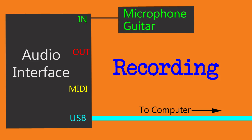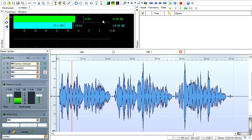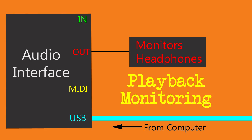When recording, the audio interface converts the signal from the microphone or guitar into data and sends it to the computer via the USB cable. The recording software on the computer converts that data into a sound wave. That data can be sent back to the interface where it will be converted into an analog signal that can be played through headphones and monitors.